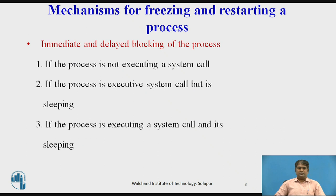In preemptive process migration, the process takes a snapshot of the process's state on its source node and reinstates the snapshot on the destination node. For this, at some point during the migration, the process is frozen on its source node. Its state information is transferred to its destination node. By freezing the process, it means that the execution of the process is suspended and all external interactions with the process are deferred. Although the freezing and restart operations differ from system to system, some general issues involved in these operations are as follows.